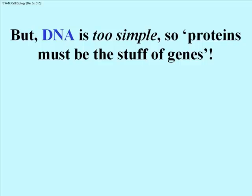For many years, people thought it must be proteins that contain genetic information — that proteins must be the stuff of genes. Why? Because proteins were made up of 20 amino acids, and it had become clear in the 1920s, 30s, and 40s that different proteins can have very different combinations of those 20 amino acids. So structurally, proteins could be much more diverse. There was a bias that proteins were the genes, not DNA. People thought perhaps that DNA was a kind of skeletal framework in the nucleus on which the genes would be hung.